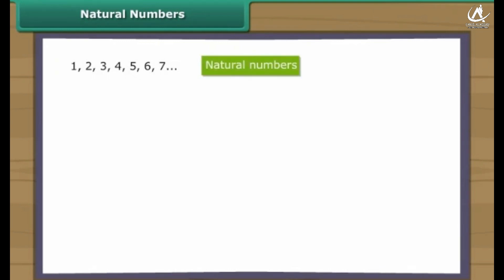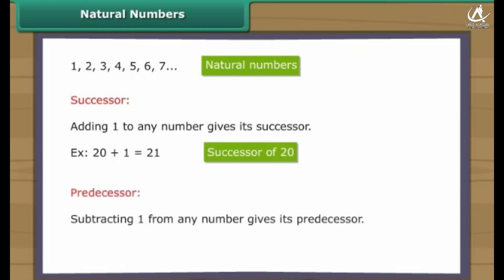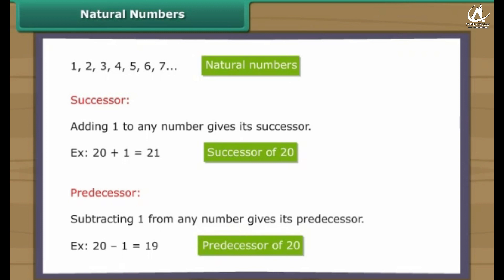We use 1, 2, 3, 4 to count objects. Counting numbers are also known as natural numbers. Adding one to any number gives its successor — for example, adding one to 20 gives 21, which is the successor of 20. Subtracting one from any number gives its predecessor — for example, subtracting one from 20 gives 19, which is the predecessor of 20.